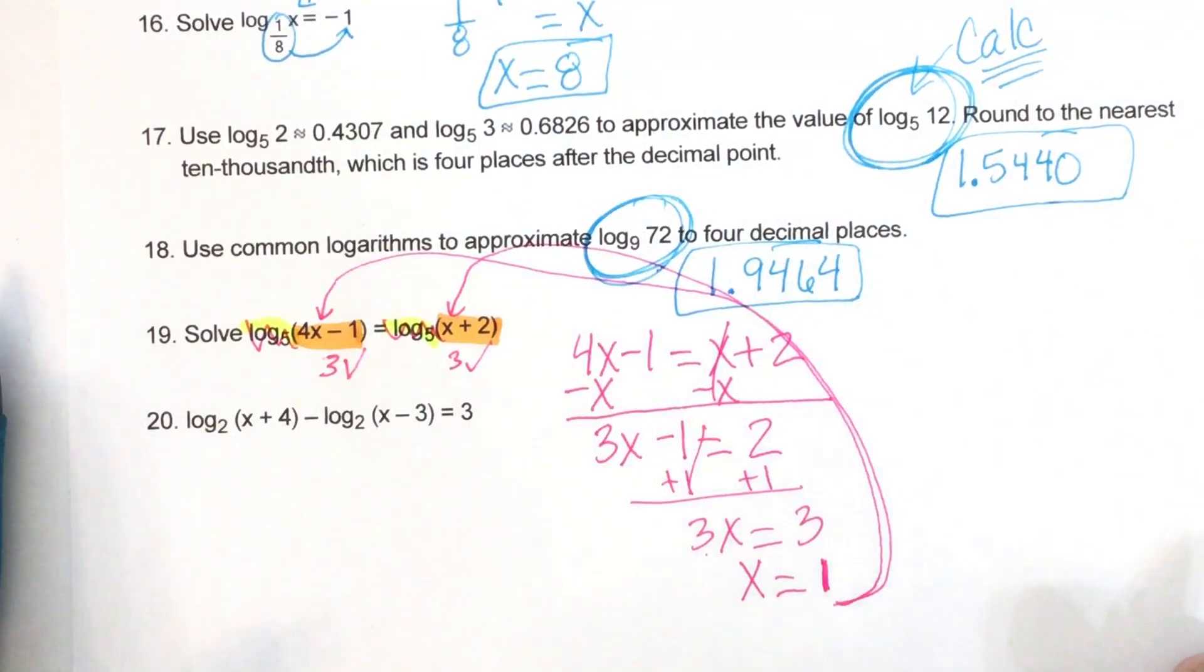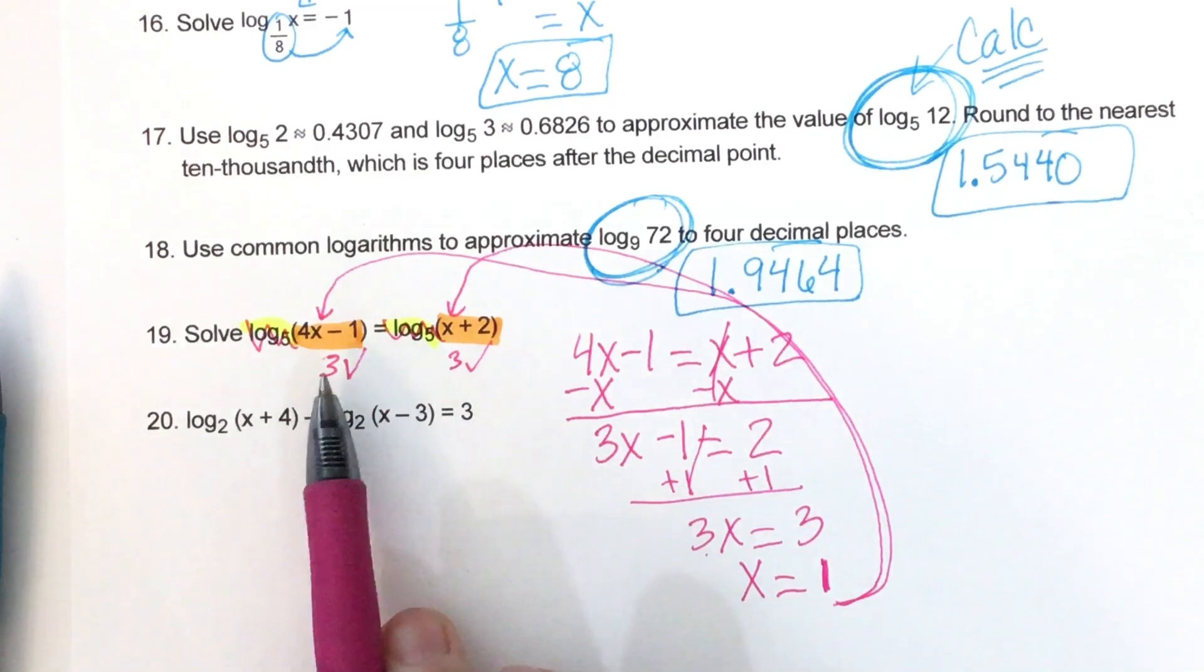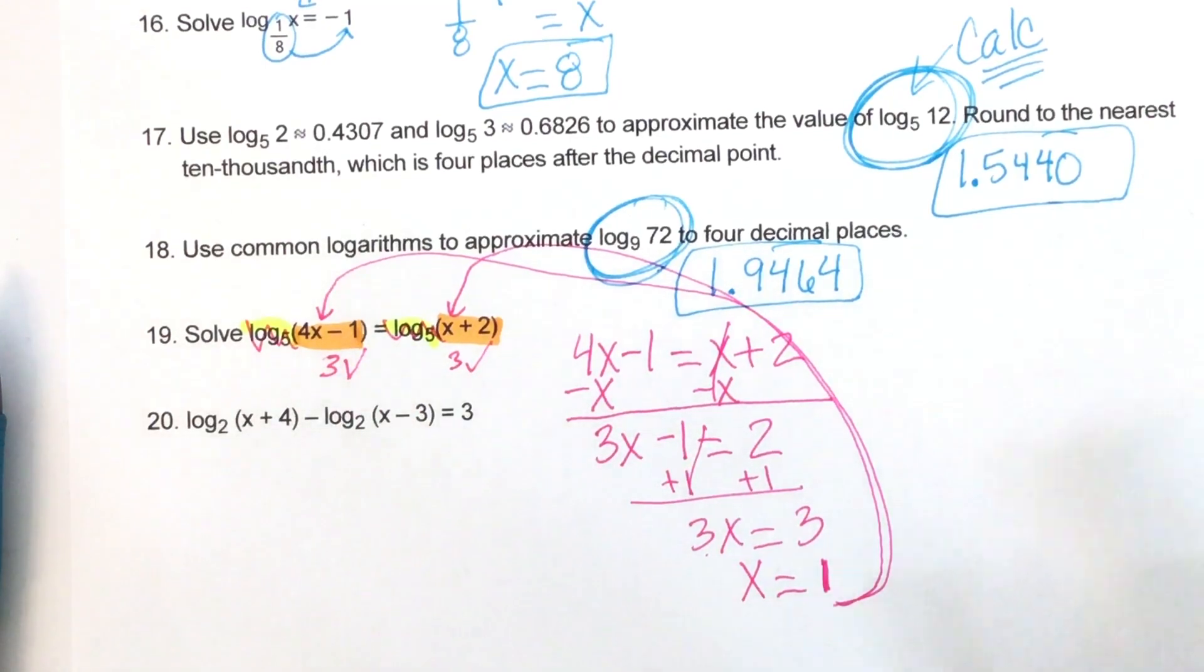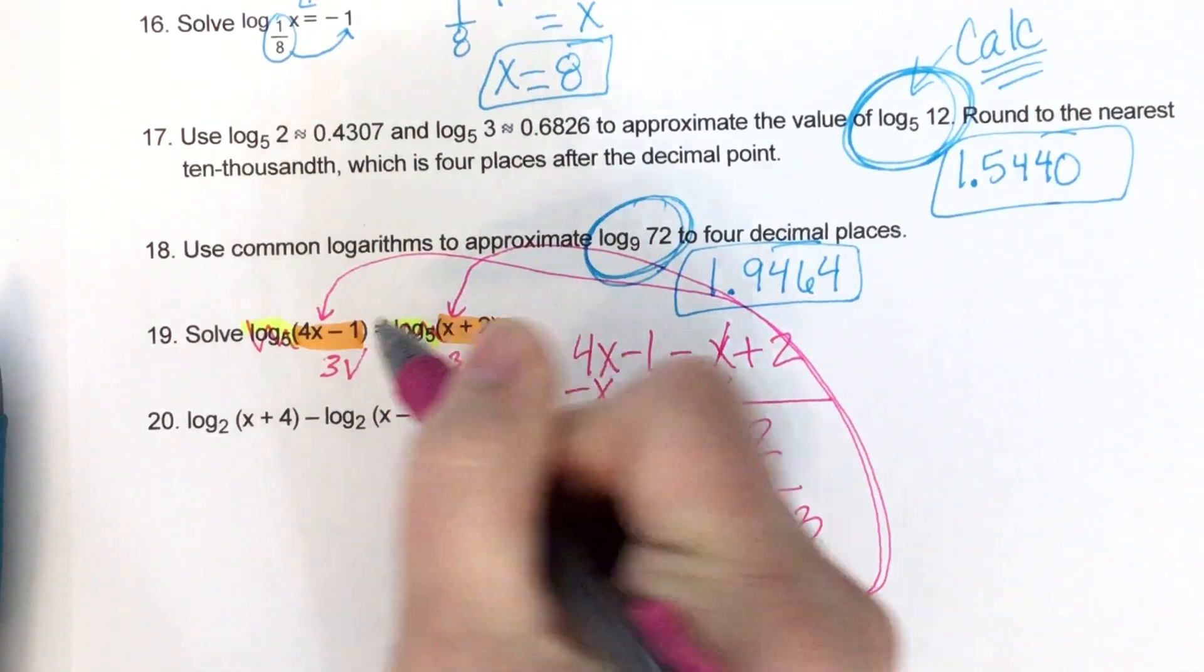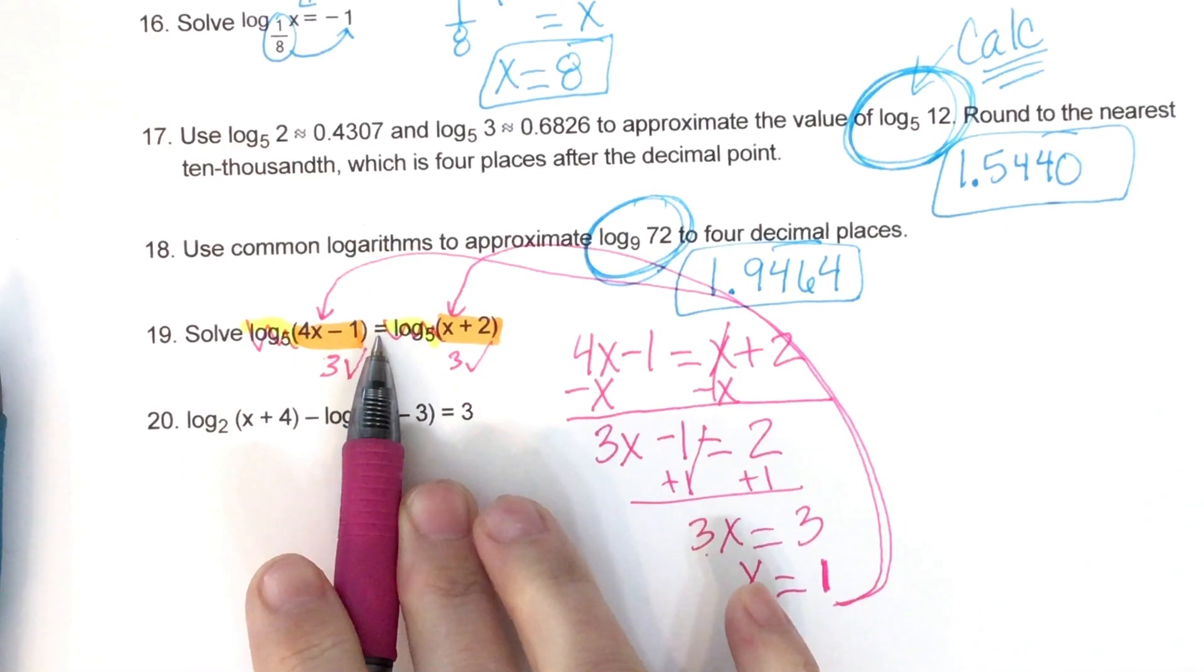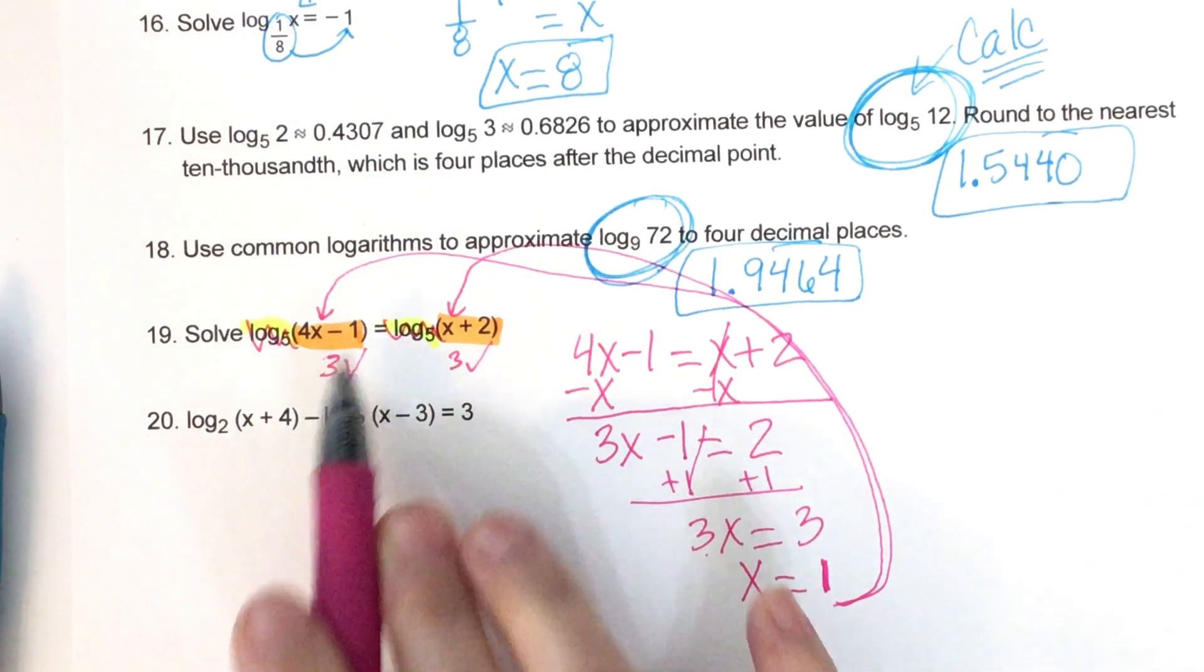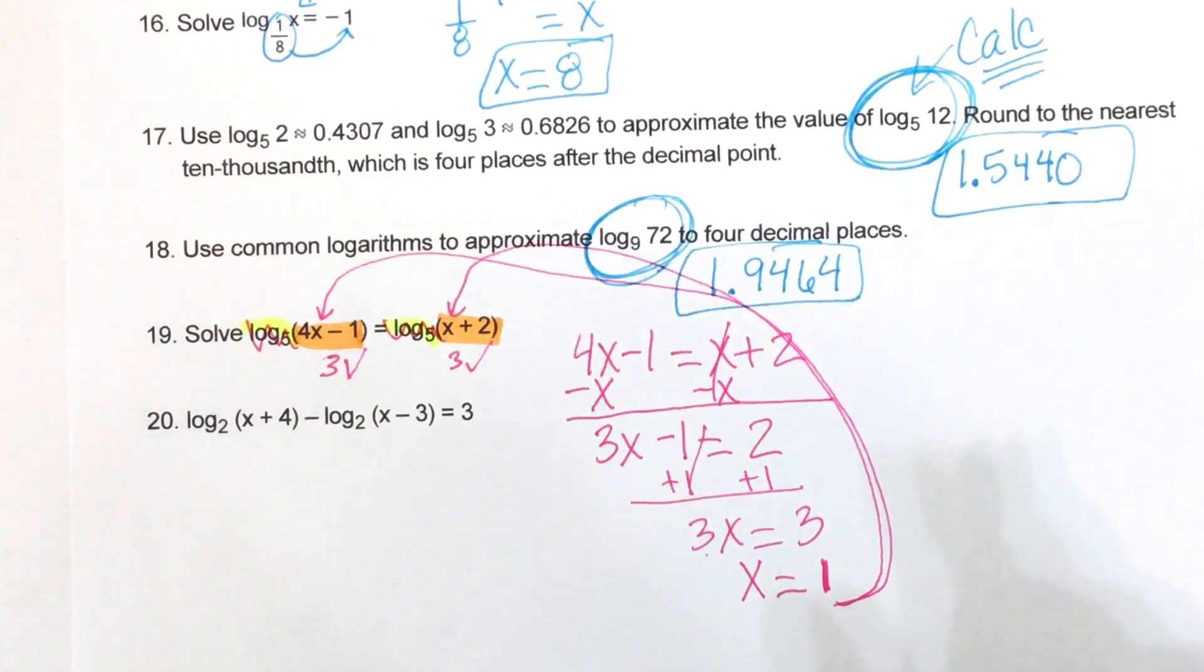So it works. Both sides are the same, which is what we want. And neither of them gave us 0 or a negative number. And the reason we're not doing the number line is because this is not an inequality symbol. If that was an inequality symbol, a less than, a greater than, less than or equal, greater than or equal, we'd have to do the number line like we did at the very beginning.